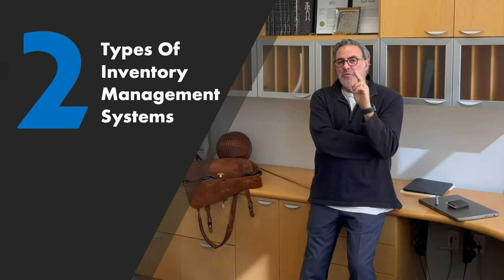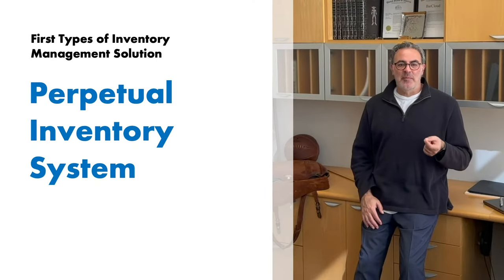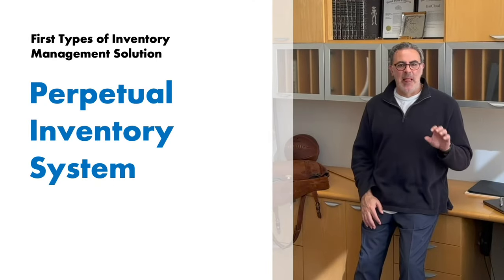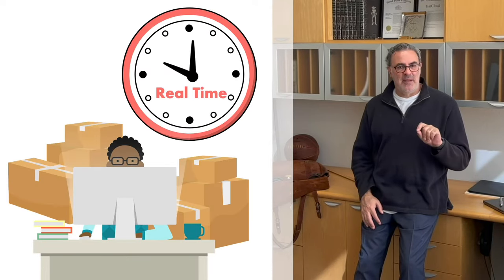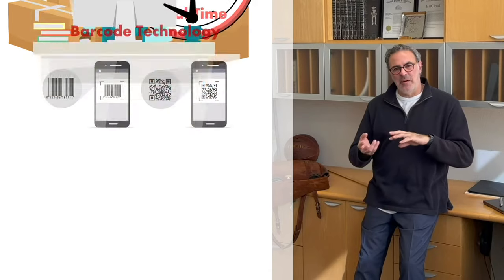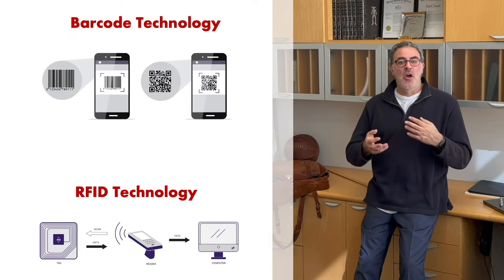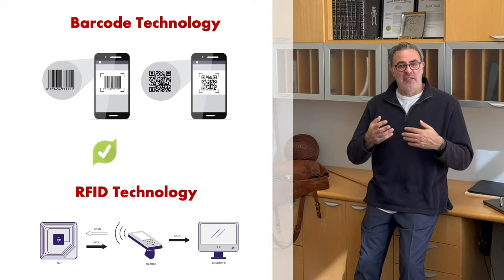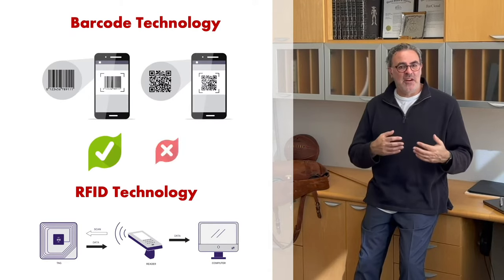Here are two main types of inventory management systems. The first type of inventory management solution is the Perpetual Inventory System. This system allows you to update your inventory tracking information in real time. Perpetual Inventory Systems generally use either barcode or RFID technology, which each have their own pros and cons.